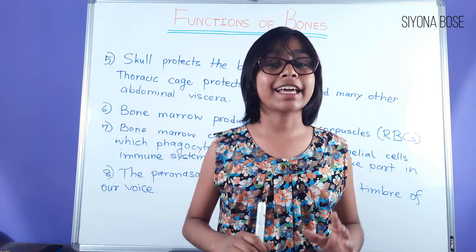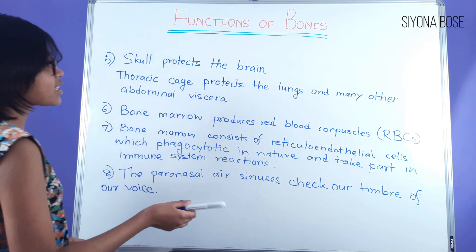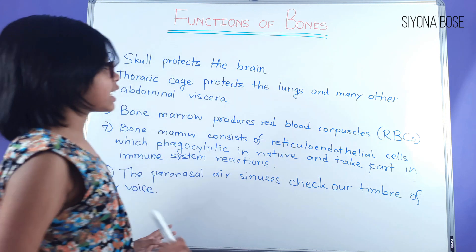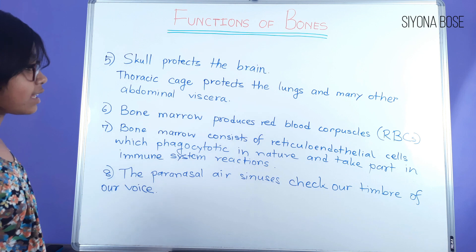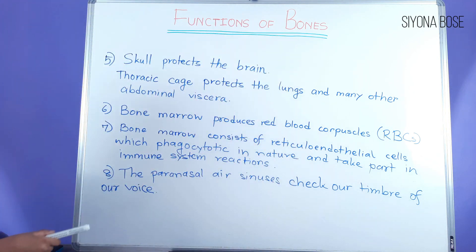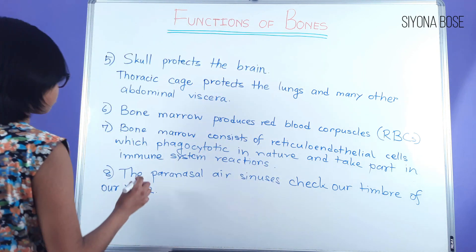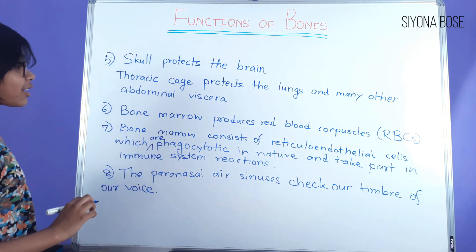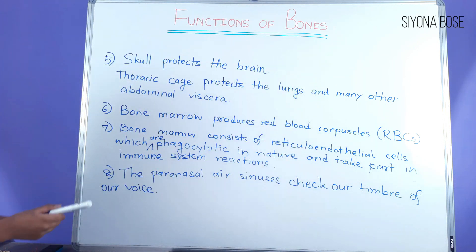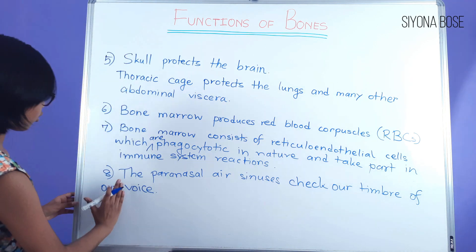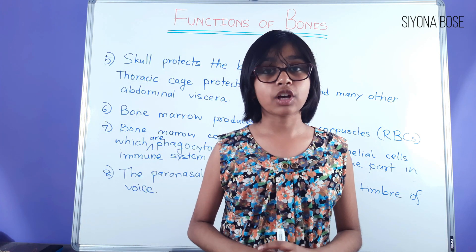To revise: the skull protects the brain; the thoracic cage protects the lungs and many other abdominal viscera. Bone marrow produces red blood cells. Bone marrow consists of reticuloendothelial cells which are phagocytic in nature and take part in immune system reactions. The paranasal air sinuses affect the timbre of our voice.